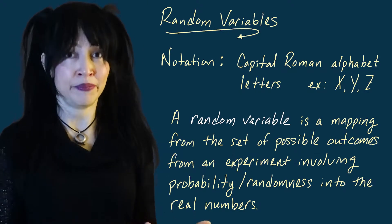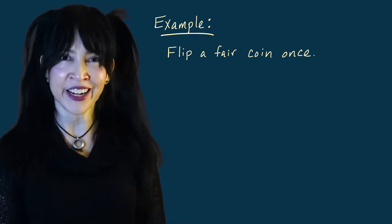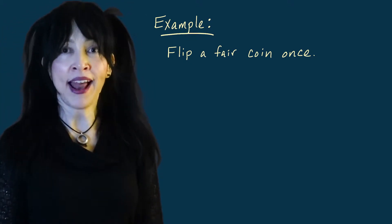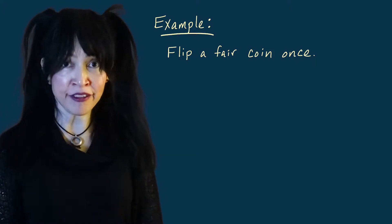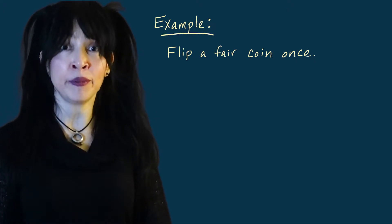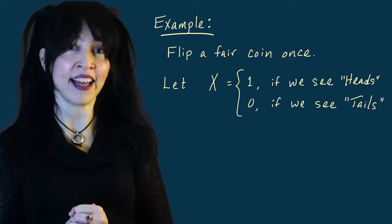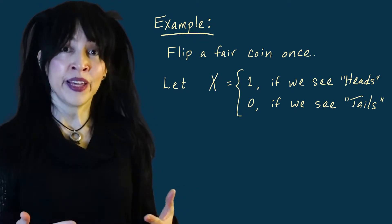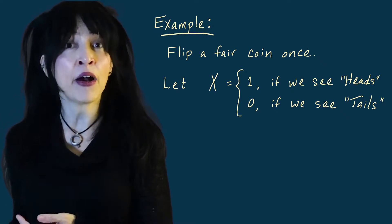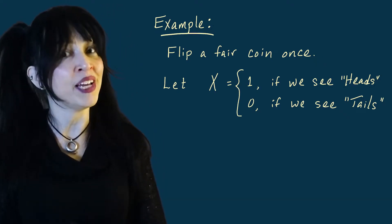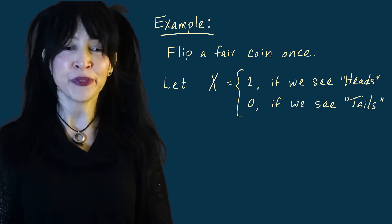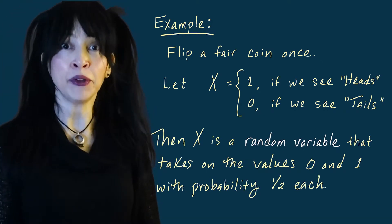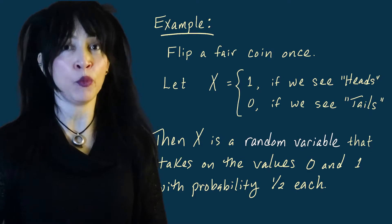As an example, suppose I flip a fair coin and I get heads with probability one half and tails with probability one half. I'm going to define a random variable capital X to be one if I get heads and zero if I get tails. That's a function that takes the outcomes of the coin flipping experiment and spits out numbers. In this case, X will take on the value zero and one with probability one half each.